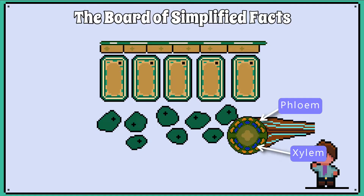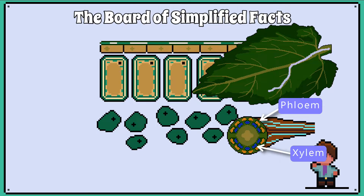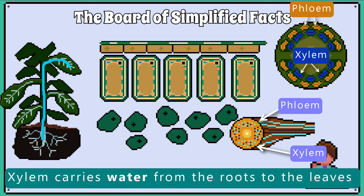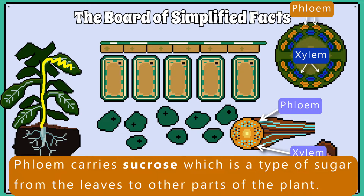Within the spongy mesophyll is the xylem and phloem. These are found in the leaf vein and these travel throughout the plant. Xylem carries water from the roots to the leaves, and phloem carries sucrose, which is a type of sugar, from the leaves to other parts of the plant.